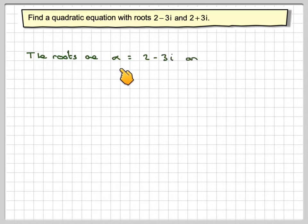So the roots are alpha is 2 minus 3i and beta which is 2 plus 3i. Now if they are conjugate pairs it means the coefficients a, b and c will be real numbers. The sum of the roots, alpha plus beta,